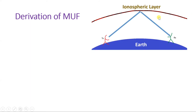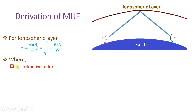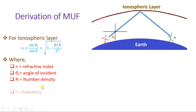Now let us derive maximum usable frequency. This is the case I already explained regarding sky wave propagation. For the ionospheric layer, the formula already derived in the previous session gives the refractive index n as sine θᵢ divided by sine θ, where θᵢ is the incident angle and θ is the angle at which the signal gets reflected back to the Earth from the ionospheric layer. Here n is refractive index, θᵢ is angle of incidence, N is number density, and f is the frequency at which we send the signal. θ is the angle at which the signal is reflected from the ionospheric layer.